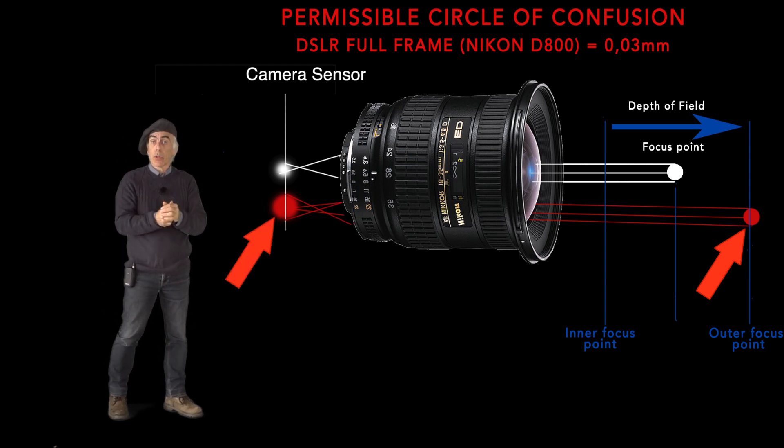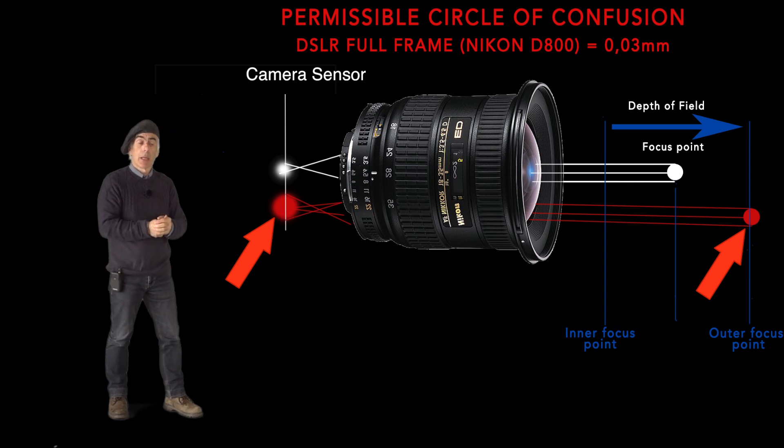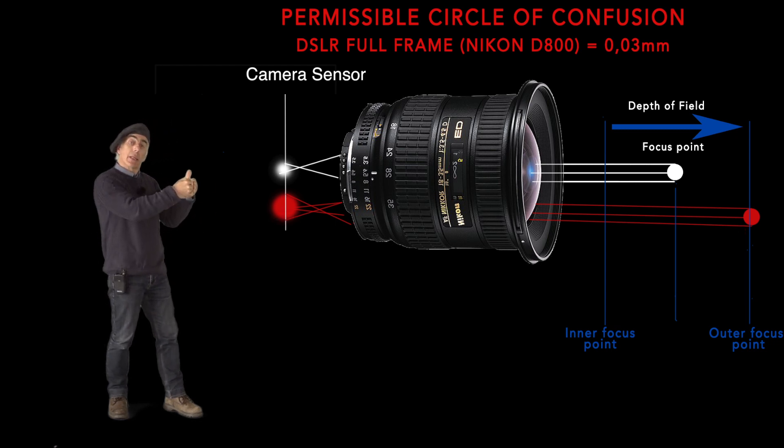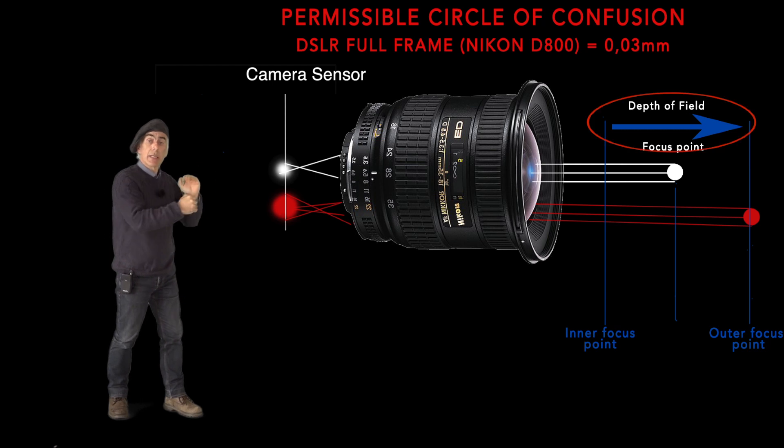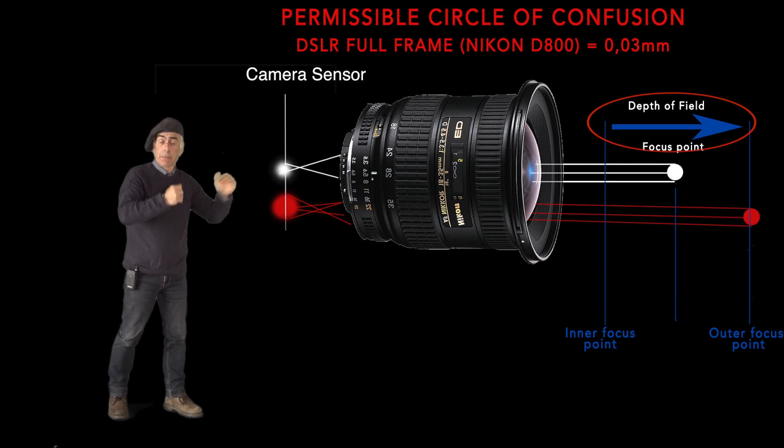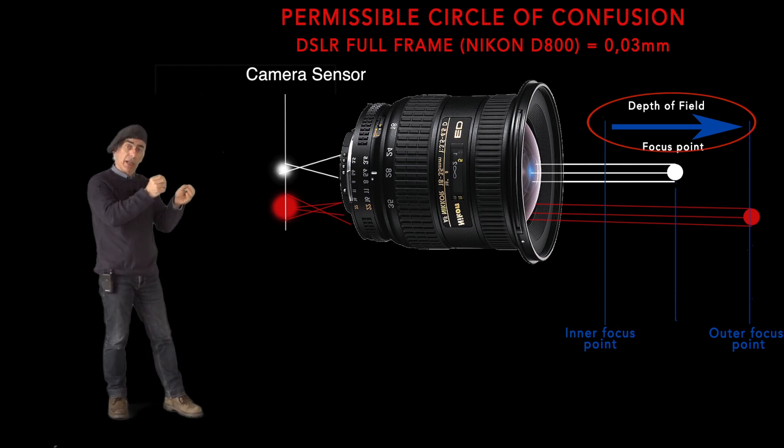The range between the focus point and how far we can go backward or forward from the focus point is actually your depth of field, and that's defined by the circle of confusion, but it's called the permissible circle of confusion.